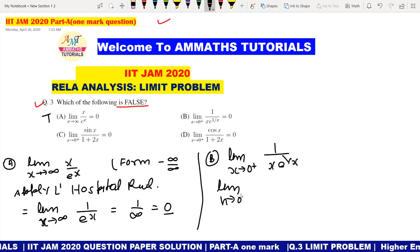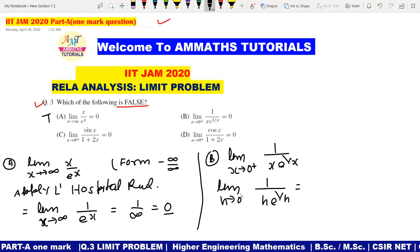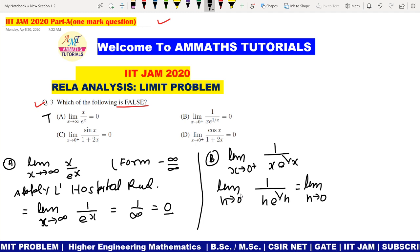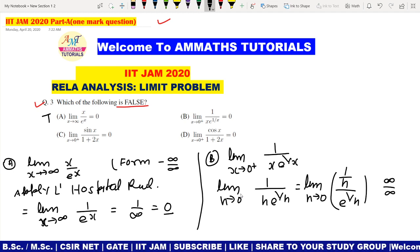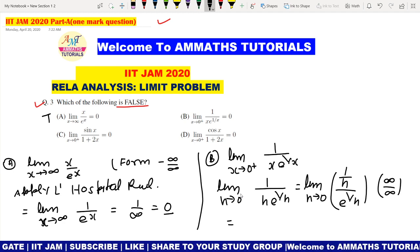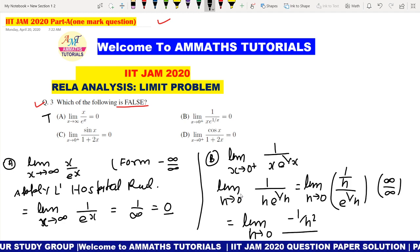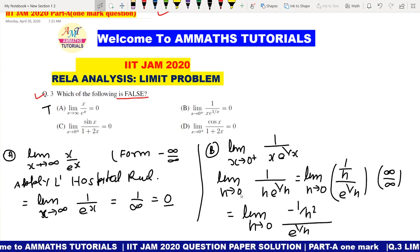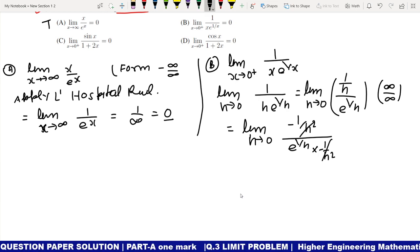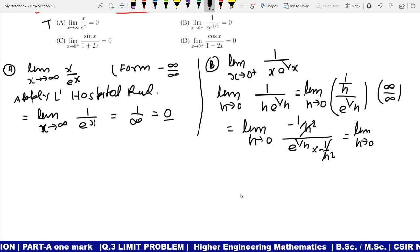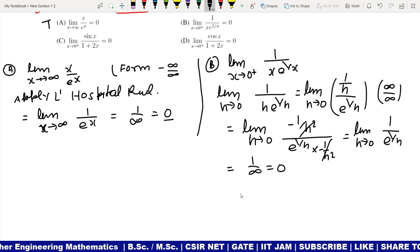Limit h tending to 0, 1 upon h times e power 1 by h. Form check: infinity upon infinity. Apply L'Hospital rule again. Limit h tending to 0, minus 1 upon h square, e power 1 by h, then minus 1 upon h square. Limit h tending to 0, 1 upon e power 1 by h, 1 by infinity, so it will be 0. So this option is true.